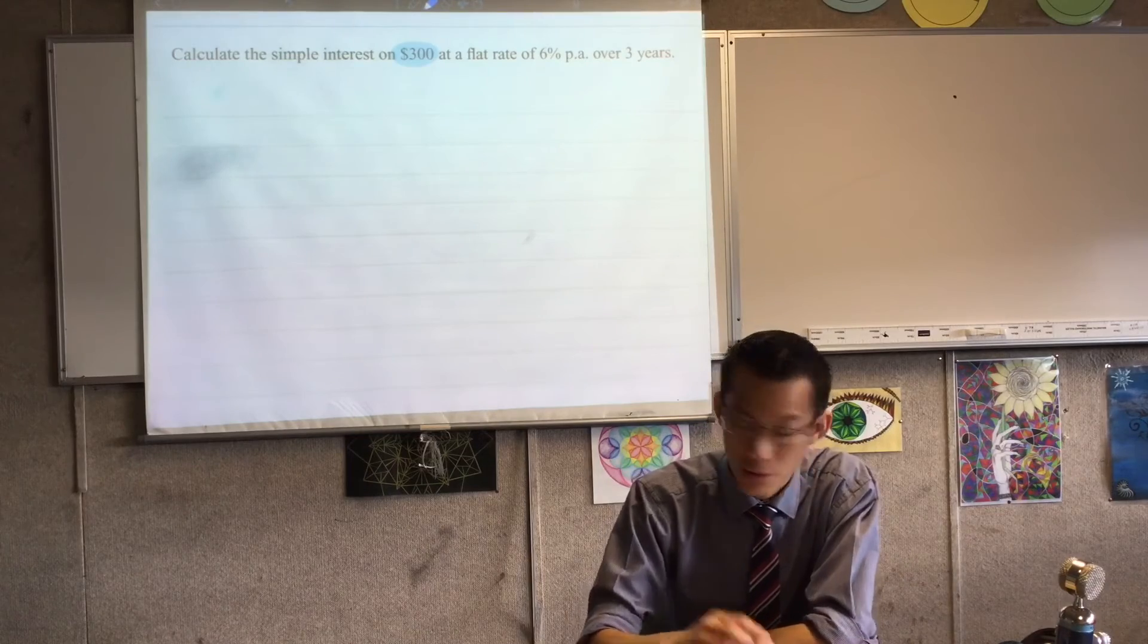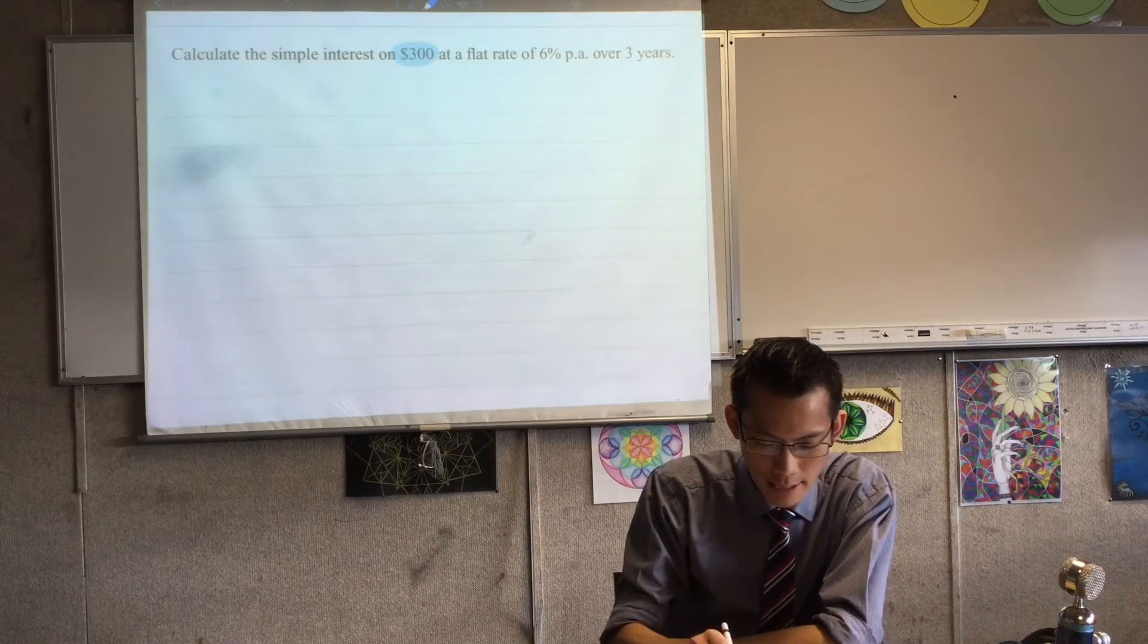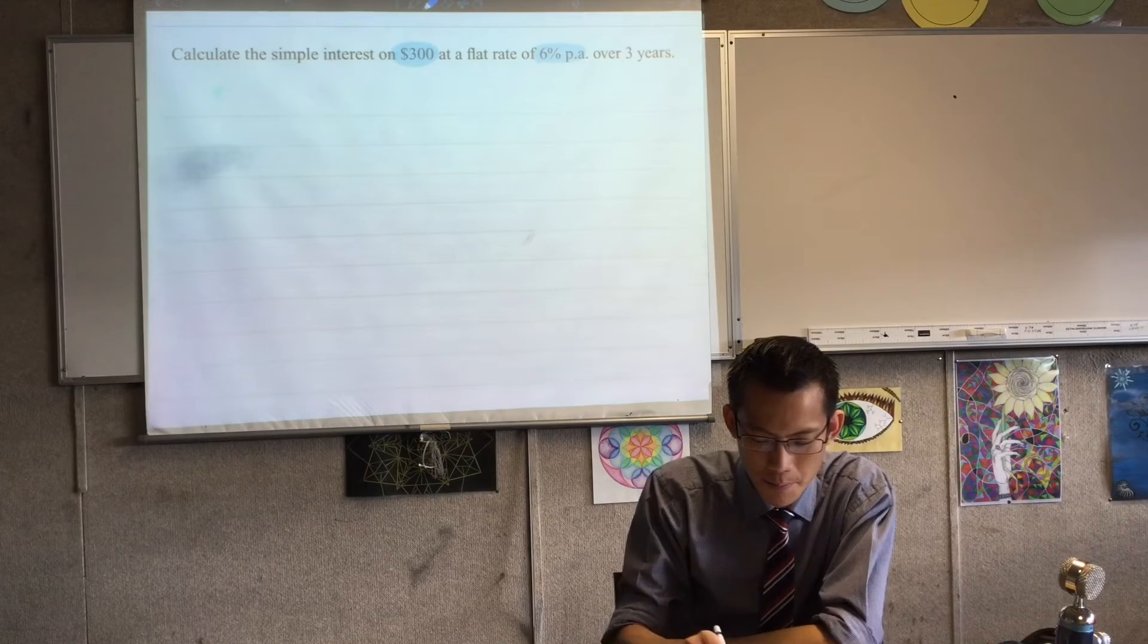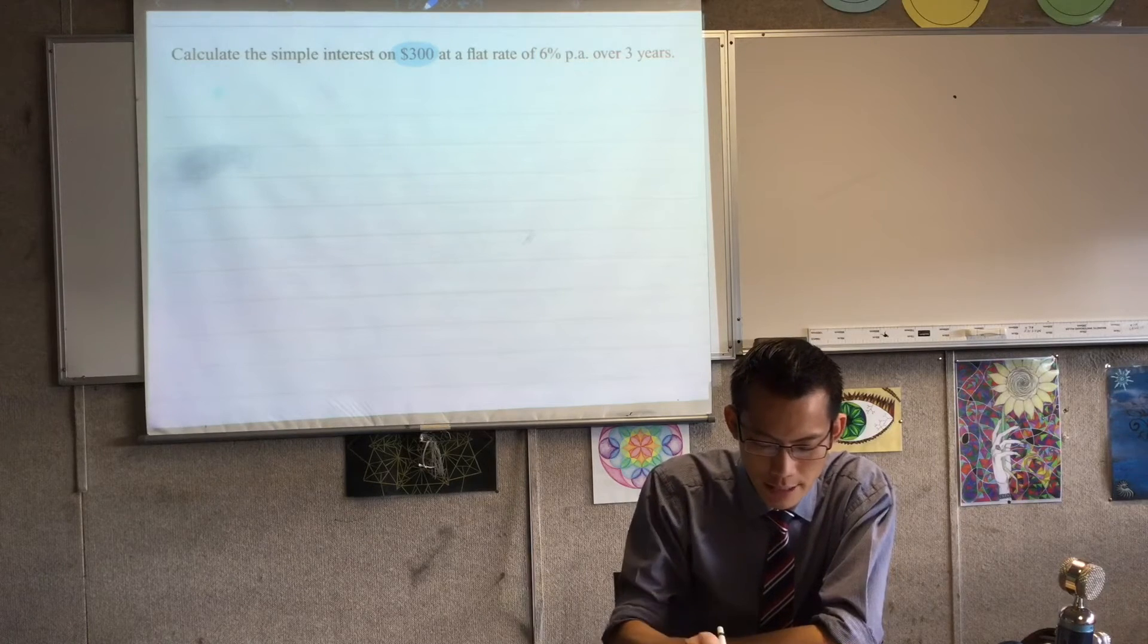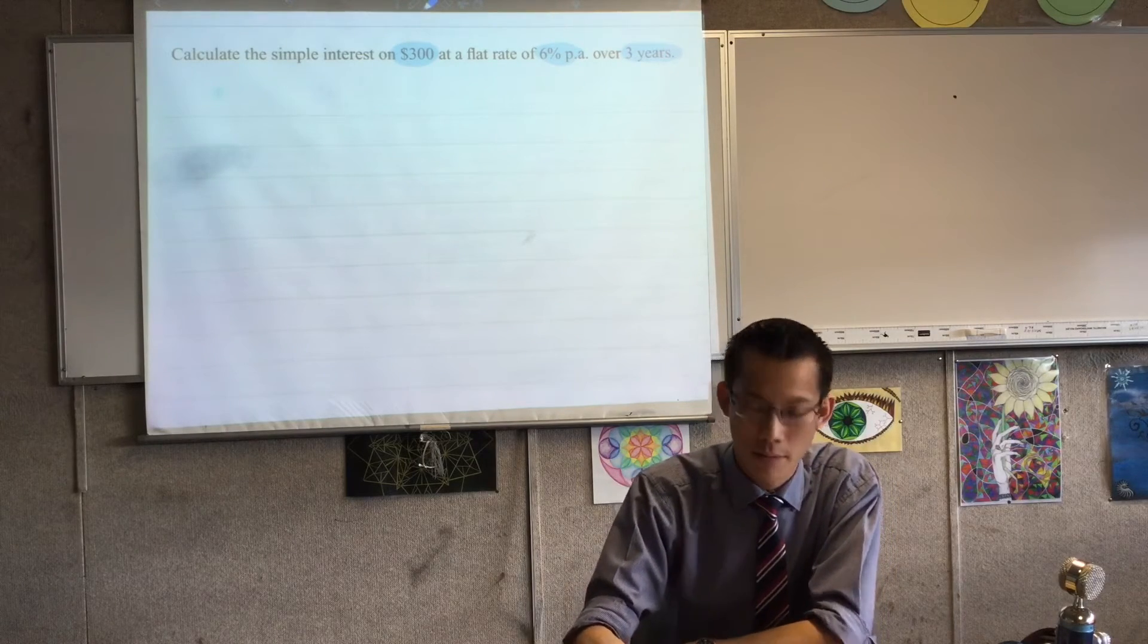I'm going to do that all the way through, and I'm going to try and describe what each piece is. Calculate the simple interest on $300, that's important, at a flat rate, I'll talk about that in a second, of 6% per annum over 3 years.